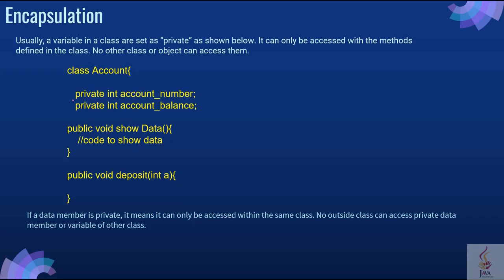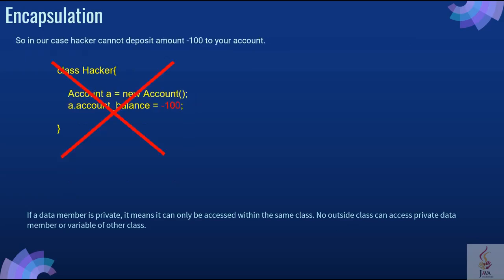As you can see, if a variable is set as private, it can only be accessed with the methods defined in the class. If a data member is private, it means it can only be accessed within the same class. No outside class can access a private data member or variable of another class. So in our case, the hacker cannot deposit an amount like minus 100 to your account.